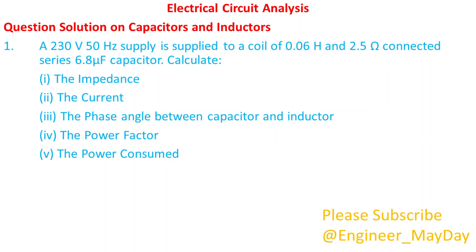A 230 volts 50 hertz supply is supplied to a coil of 0.06 Henry and 2.5 ohms connected in series with a 6.8 microfarads capacitor. Calculate: 1. The impedance. 2. The current. 3. The phase angle between capacitor and inductor. 4. The power factor. 5. The power consumed.